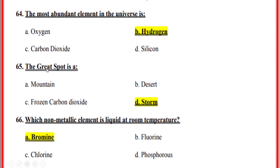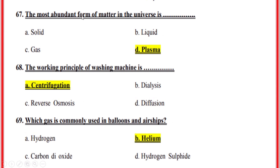Hydrogen. The Great Red Spot is a — correct option D — storm. Which non-metallic element is liquid at room temperature? Correct option A — Bromine. The most abundant form of matter in the universe is — correct option D — Plasma. The working principle of a washing machine is — correct option A — centrifugation.